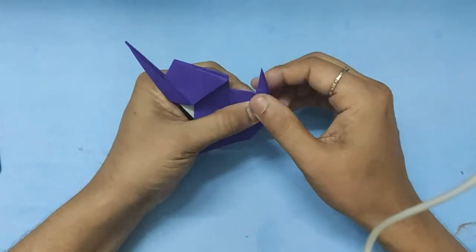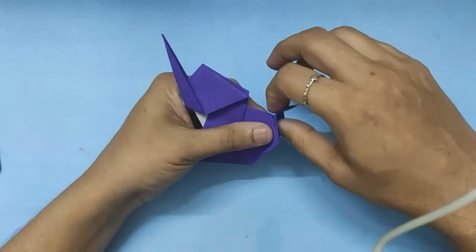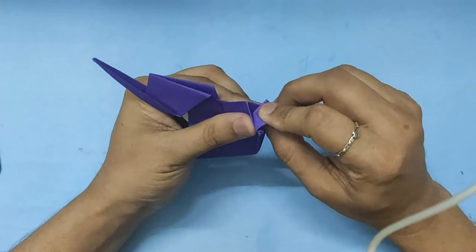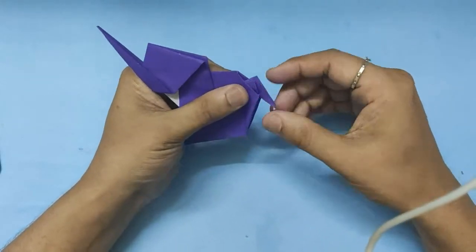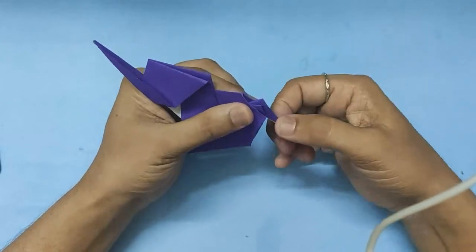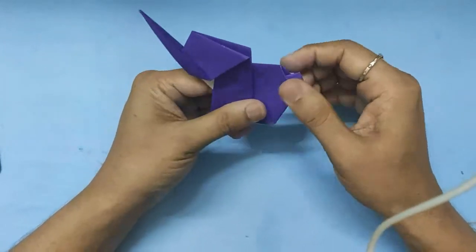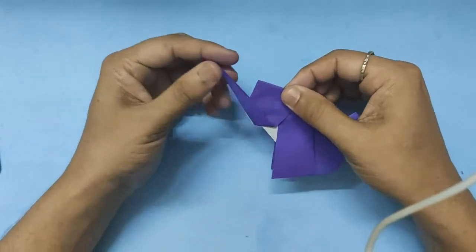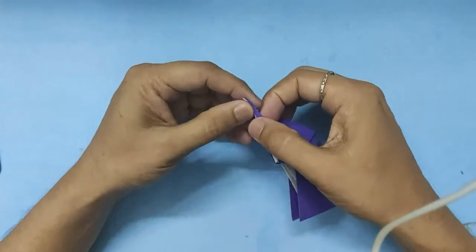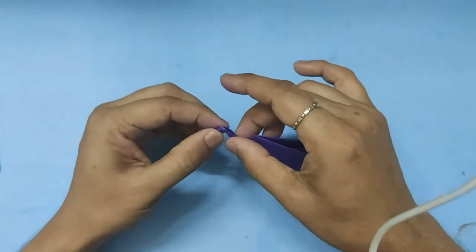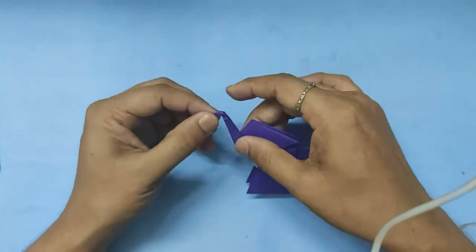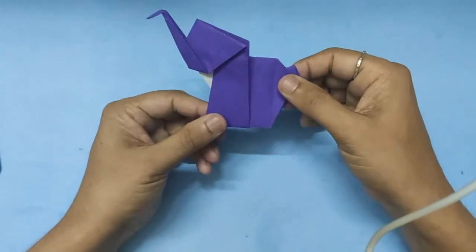Now the tail, you will fold it down like how you make a bird's beak. So that is the tail of the elephant formed. And you can fiddle around and turn the trunk and give it a shape out there. Now that is the elephant.